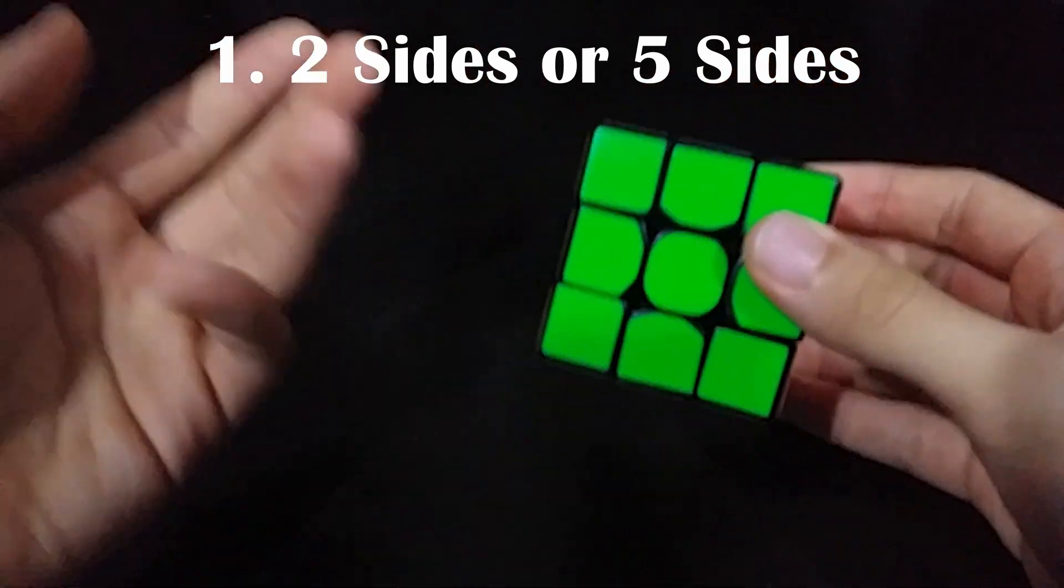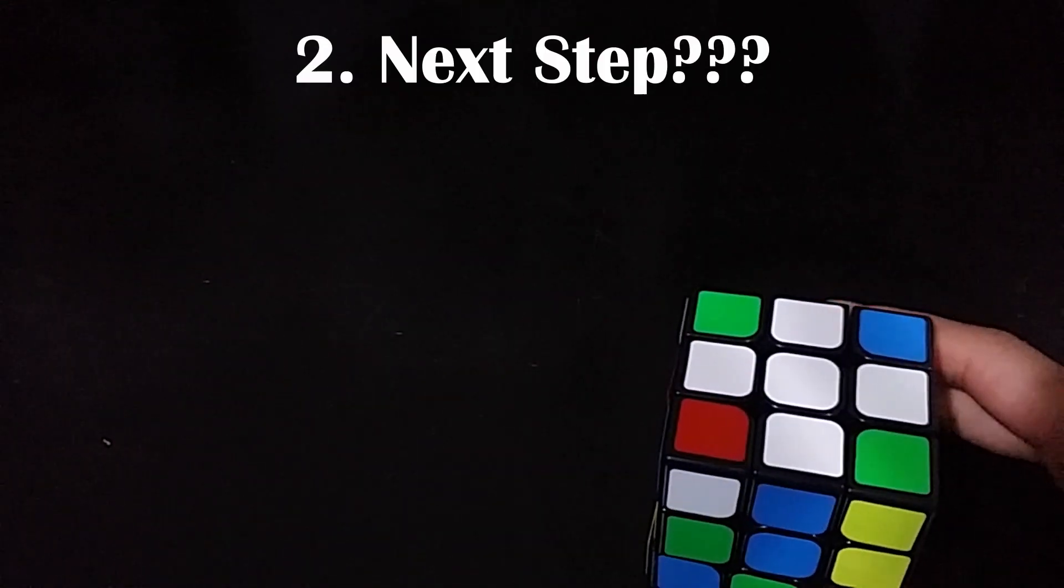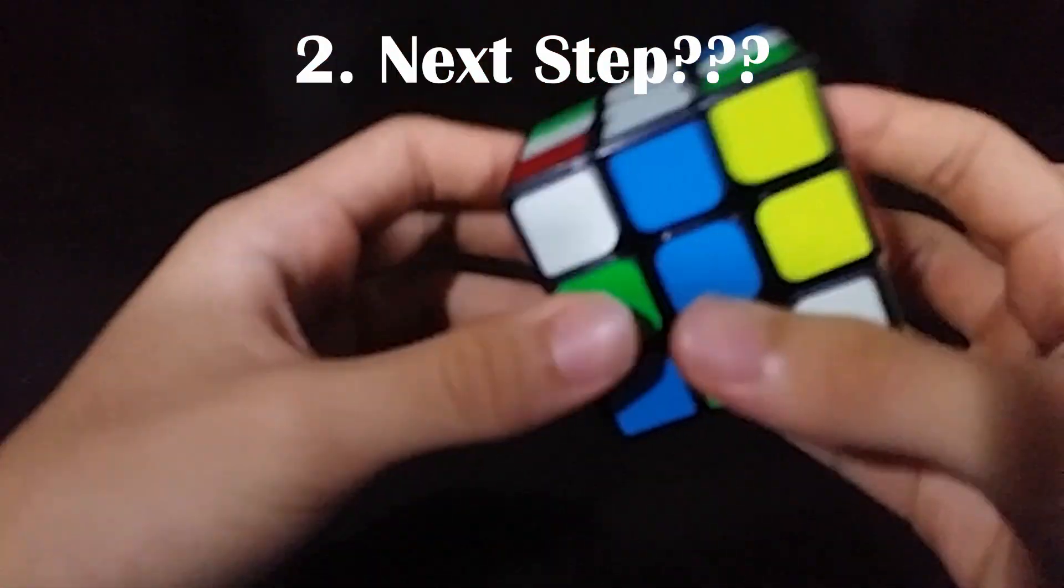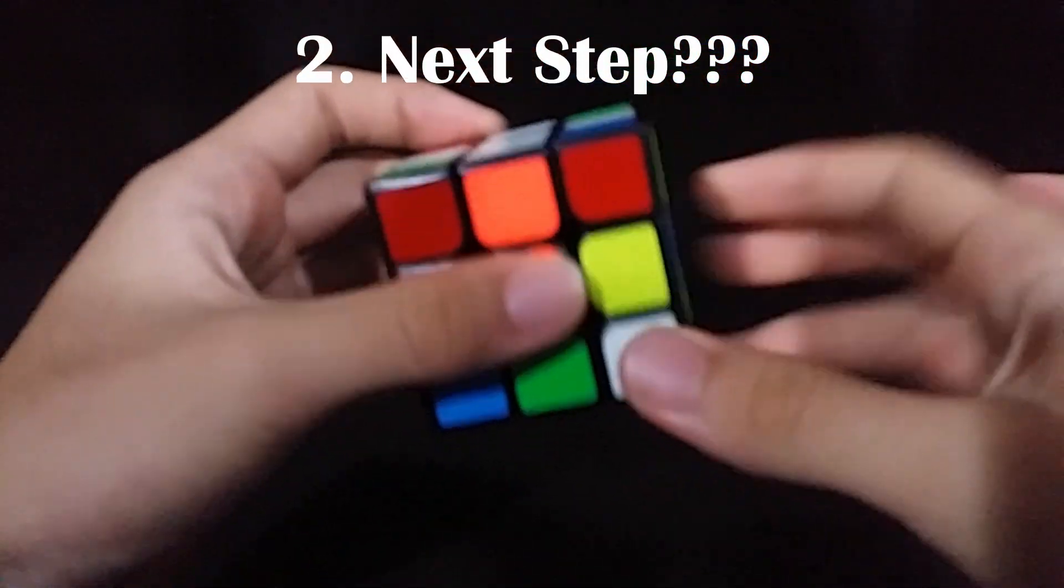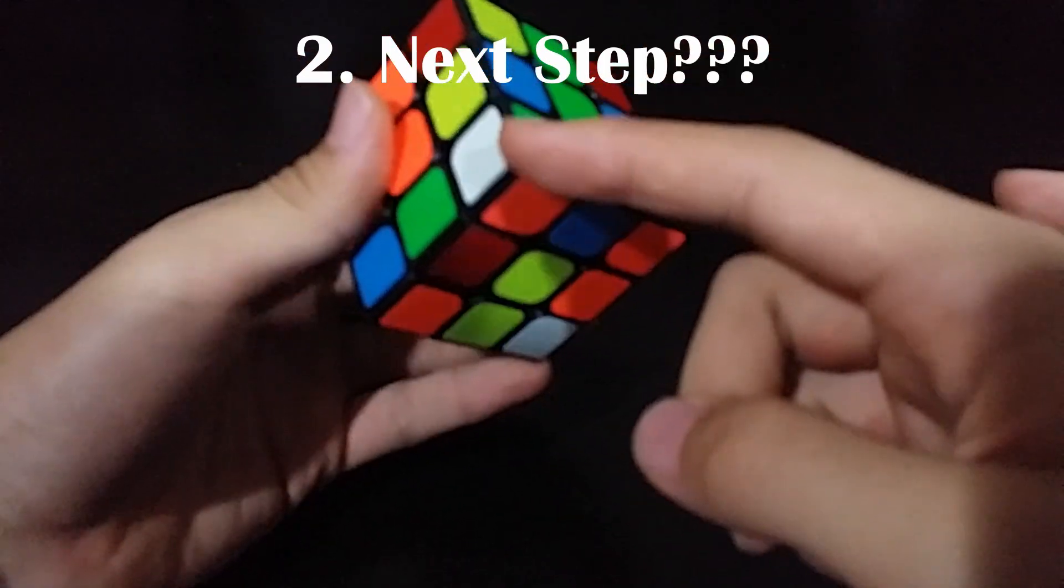So two sides is way easier. What's the next step after solving the cross? I told you like a million times, find a corner that has the same color as white, orange, and green. Here it is.